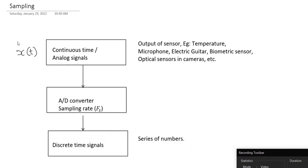In our discussions, we're using this notation here to represent continuous time signals where the parameter is given in parentheses and t is usually time. And for discrete time signals, we're using this notation here where the parameter is given in square brackets and n denotes the sample number. In general, this sample number can also be negative, and for more theoretical discrete time signals, the sample number can go from minus infinity to plus infinity, just as the parameter t for continuous time signals can.